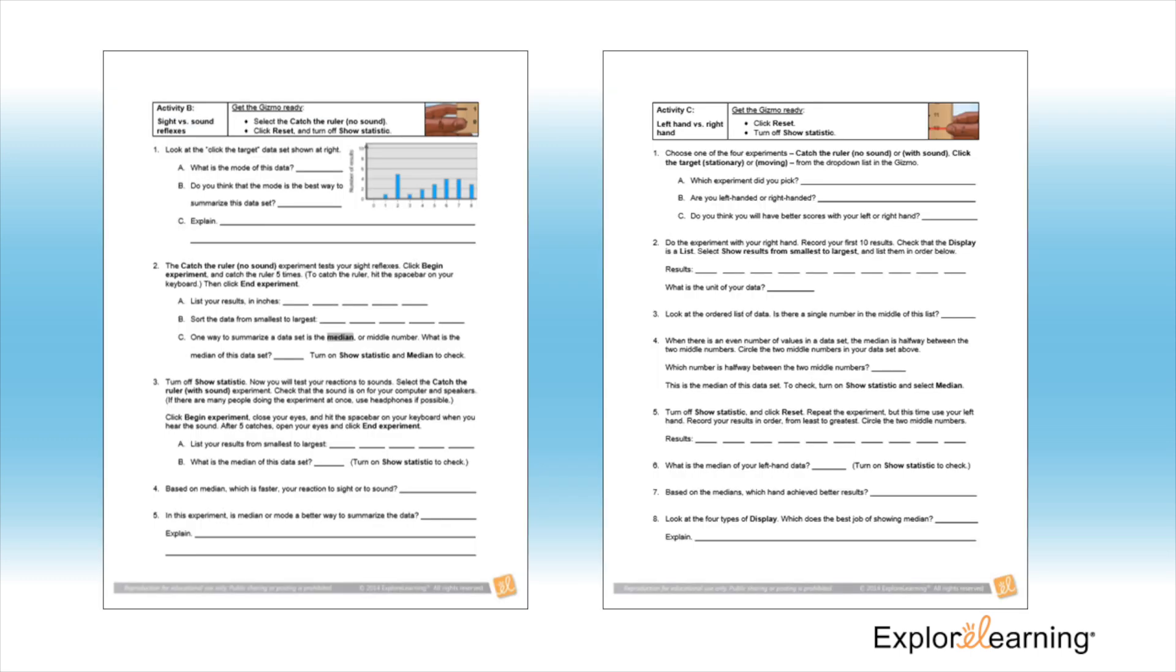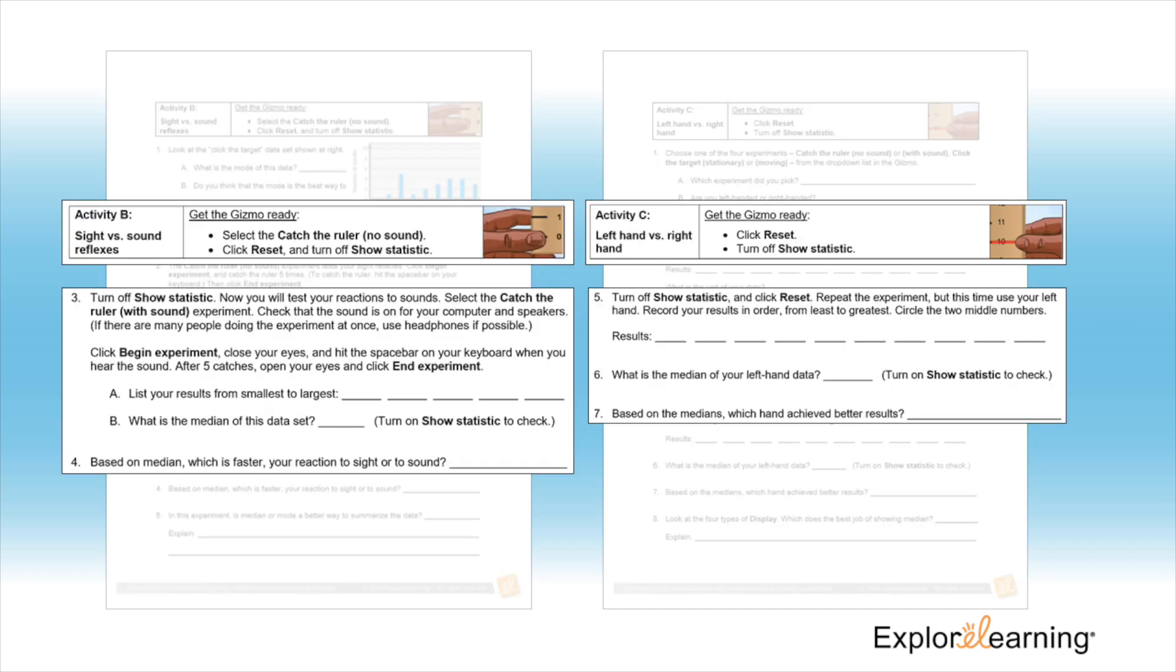Activity B and C in the Student Exploration Guide allow students not only to analyze data, but compare it as well when they look at their reaction times with sight vs. sound and left vs. right reactions. I like to create a table of the class's data as a whole and see if the students can create an ideal situation with their faster hand and faster sight vs. sound reflex.